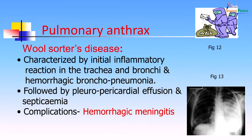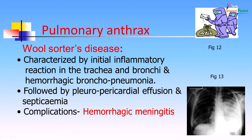Pulmonary anthrax, often referred to as Woolsorter's disease, is characterized by an inflammatory reaction in the trachea and bronchi and often results in hemorrhagic bronchopneumonia. It is followed by pleuropericardial effusion and septicemia. Complications can include hemorrhagic meningitis. Anthrax usually occurs in people working in wool factories; recently there have been cases of bioterrorism where anthrax was spread using infected letters.